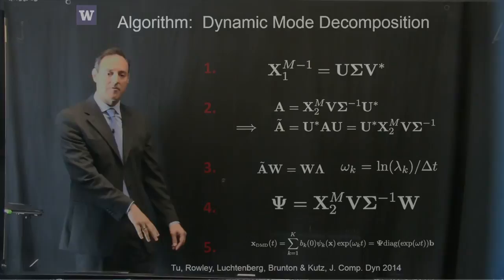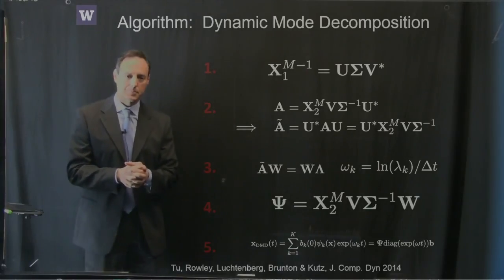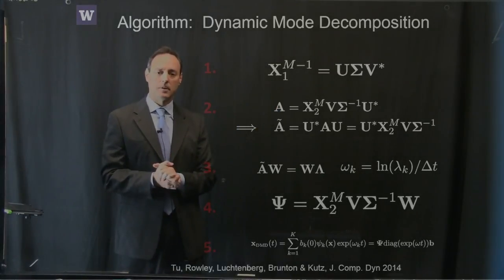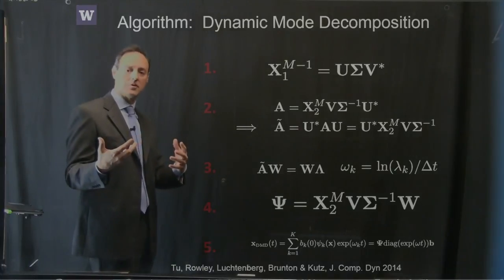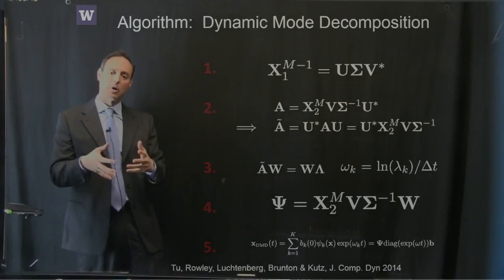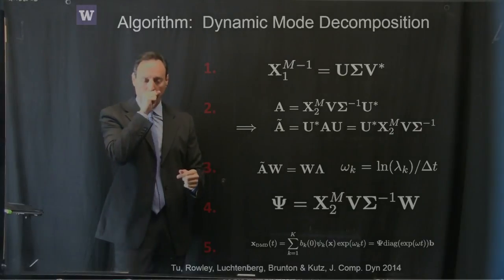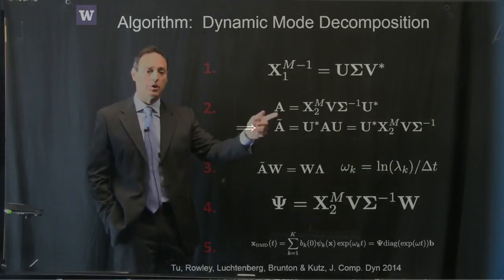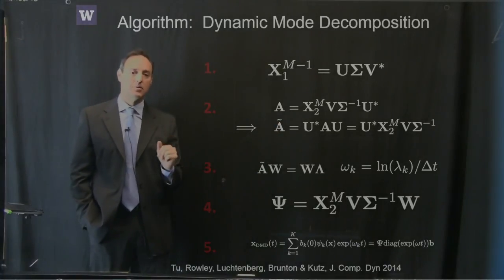Since Schmidt's proposal, it's been modified by Tooh to exact DMD. The algorithm starts with data collection from frame 1 to M-1 and performs an SVD. Right away you can take advantage of dimensionality reduction — you might find a low-rank space ideal for capturing the dynamics and perform a low-rank truncation at this step. Once you have this decomposition, you construct a matrix A-tilde, which is a similarity matrix to the data matrix.